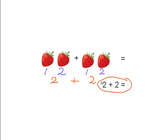So what does that equal? 2 plus 2 equals, let's write, 4. So we have 4 strawberries.